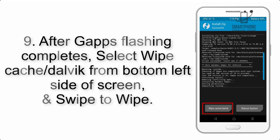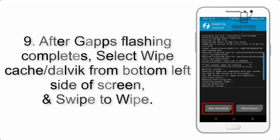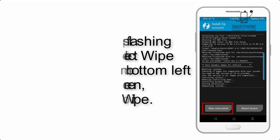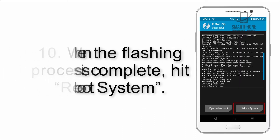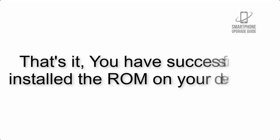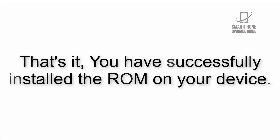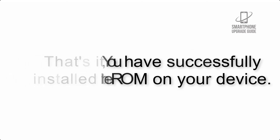Step 8: Flash the GApps zip package in the same manner. Step 9: After GApps flashing completes, select Wipe Cache and Dalvik from the bottom left side of the screen and swipe to wipe. Step 10: When the flashing process is complete, hit Reboot System. That's it — you have successfully installed the ROM on your device.